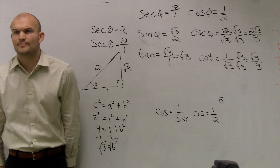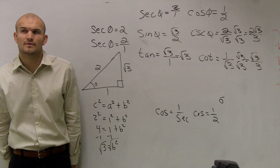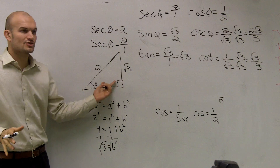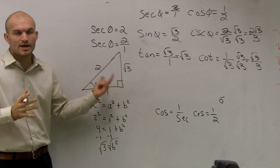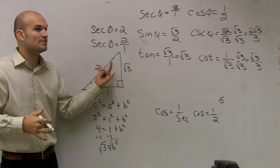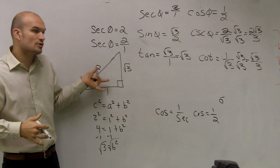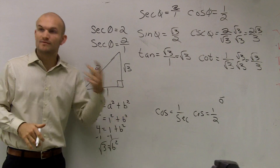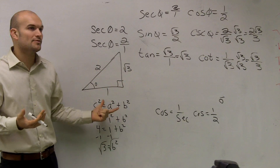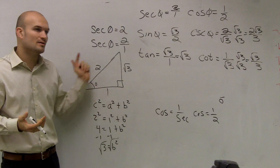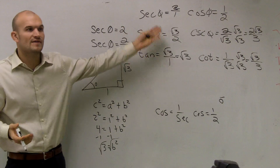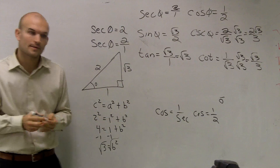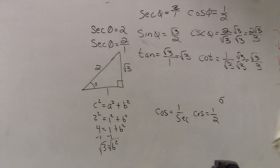Does everybody see that? Any questions? Use your initial angle to help you find your triangle — whatever that ratio is, use it to draw the triangle. Once you know two sides, use the Pythagorean theorem to find the third side. Then, once you know all three sides, just evaluate for your sine, cosine, and tangent.